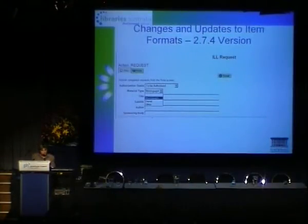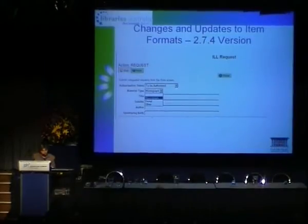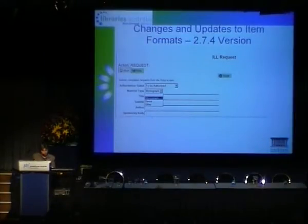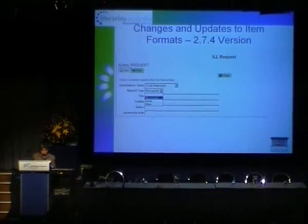And there are changes in formats too. Called material type in the old version, there are three item formats available: monograph, serial, and other.